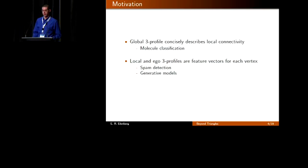So you might wonder why we care about this. The global three profile is a concise global statistic that gives some notion of local connectivity. This has been used to classify molecules, compounds, proteins to predict properties based on structure. You can use local and ego three profiles as feature vectors for each vertex to classify different vertices, for example, detecting spam in a social network. Subgraph frequencies are a good way to differentiate social networks from other random graph families, so we can use this to develop and test new generative models.